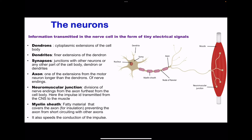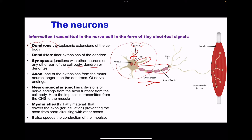Looking at the structure of a neuron, using the motor neuron as an example: dendrons are extensions of the cytoplasm from the cell body. These dendrons have smaller connections called dendrites. There is a nucleus inside the cell body. The axon is the longer extension from the cell body through which the impulse travels away from the cell body. Synapses are junctions or connections between one neuron and another part of a cell body, dendron, or dendrite.